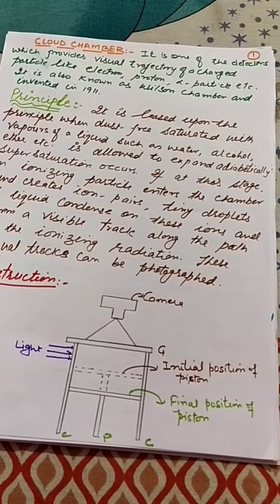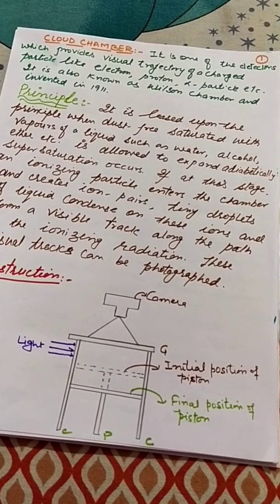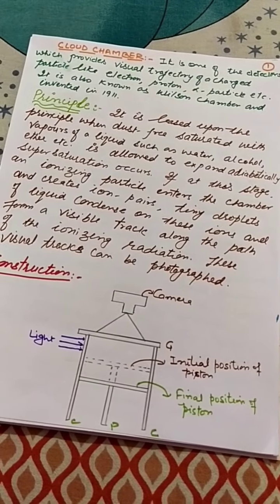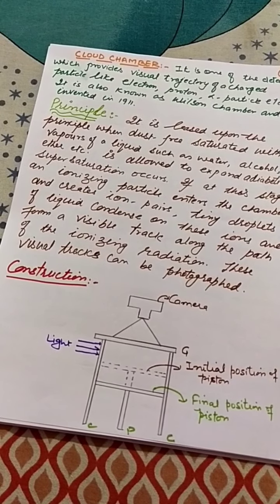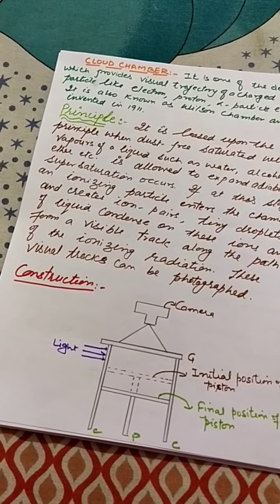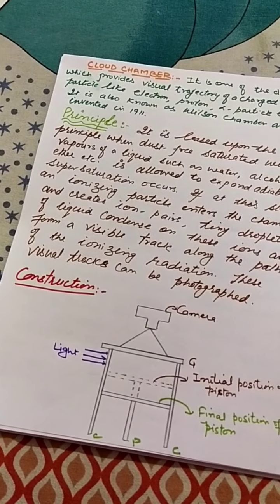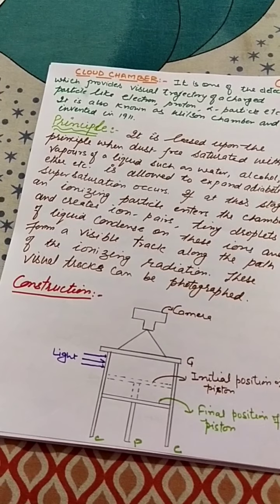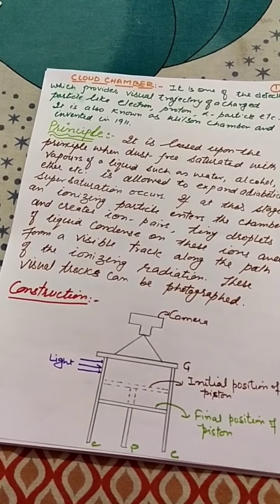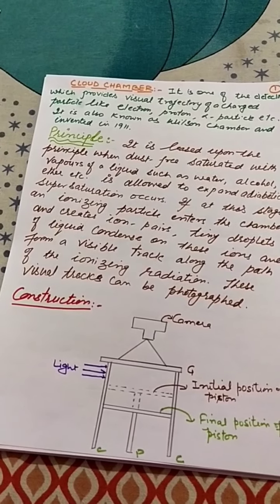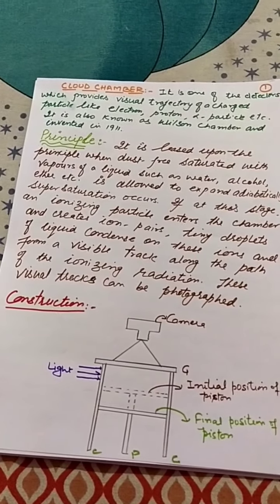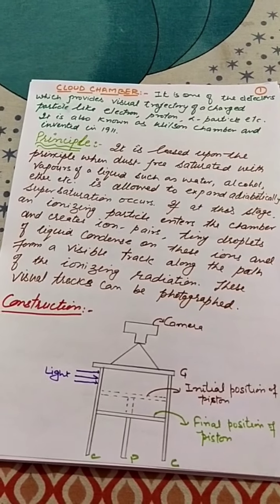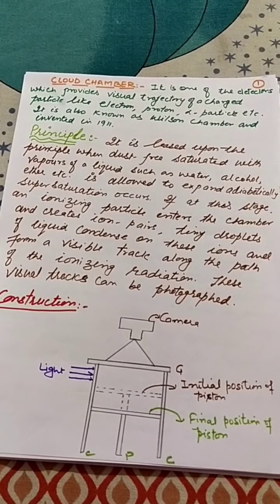If at this stage an ionizing particle enters the chamber and creates ion pairs, the tiny droplets of liquid condense on these ions and form a visible track along the path of the ionizing radiation. These visible tracks can be photographed. In some cases, the cloud chamber is subjected to a strong magnetic or electric field. Such a field causes the charged particle to travel in a curved path. The curvature of the curved path gives information about the mass and charge of the ionizing particles.